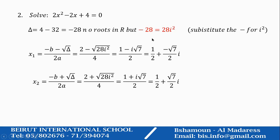You end up with delta equals 28I squared. X1, which is a complex root, will be minus B minus radical delta over 2A. It is 2 minus radical 28I squared over 4. If you simplify, it will be half plus minus radical 7 over 2I of the algebraic form of a complex number. X2 will be half plus radical 7 over 2I.